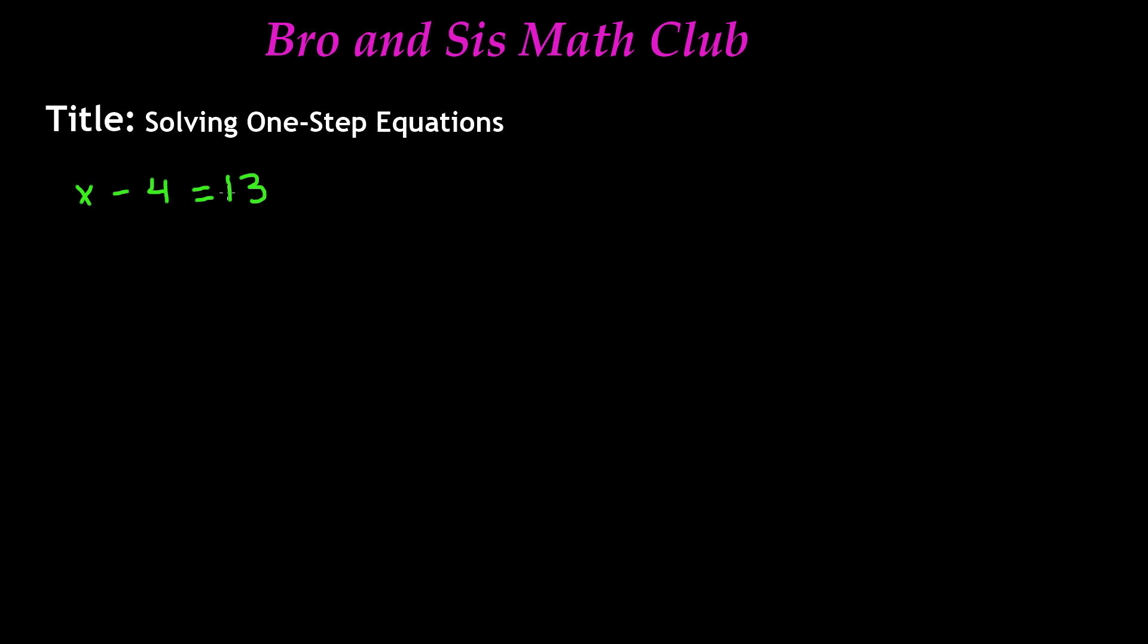In our previous video, we learned about inverse operations and how we can use them to solve an equation. We have four operations in math: addition, subtraction, multiplication, and division. Addition and subtraction go together, and multiplication and division go together. For example, if in an equation there's addition, then to get rid of addition, you're going to do subtraction. In the same way, if you have subtraction, then you're going to do addition, and so forth.